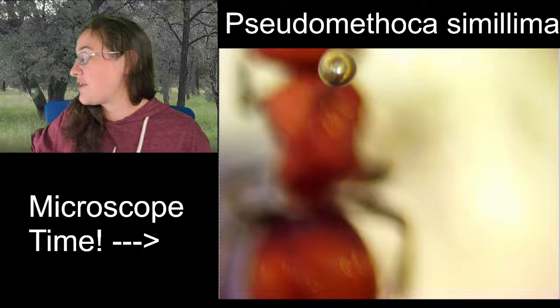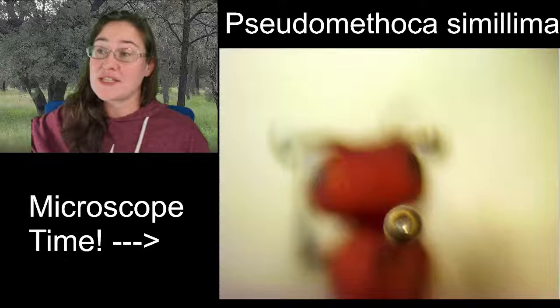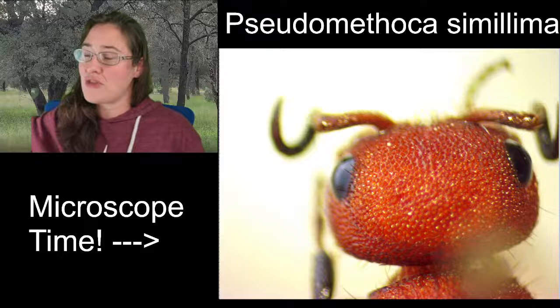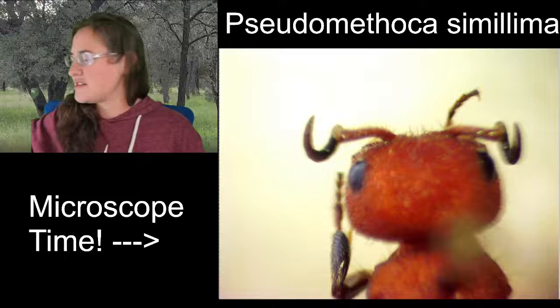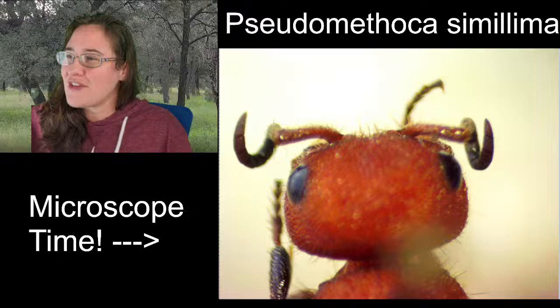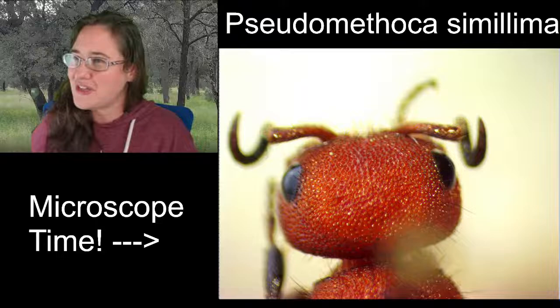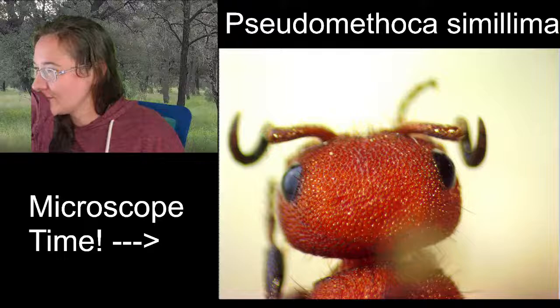Velvet ants are not always found in the Pine Barrens specifically, but they do like sandy soil. You find them regularly in the desert and also around lakes and streams if it's a sandier area — around ponds with sandy soil around them, and in dunes. I believe that's because of what they parasitize — velvet ants are a parasitoid; they feed on something that digs down into the soil.